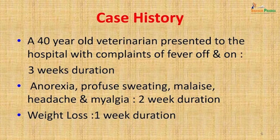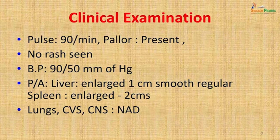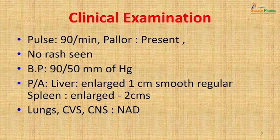Starting with brucellosis: a 40-year-old veterinarian presented to the hospital with complaints of fever off and on for 3 weeks duration, anorexia, profuse sweating, malaise, headache and myalgia of 2 weeks duration, and weight loss of 1 week duration. On clinical examination his pulse was 90 per minute, pallor was present, no rash was seen, blood pressure was 90/50 mmHg. Abdominal examination revealed an enlarged liver of 1 centimeter, smooth and regular, and spleen enlarged 2 centimeters. Lungs, cardiovascular system and CNS showed no abnormalities.